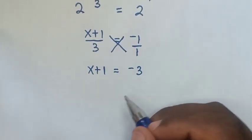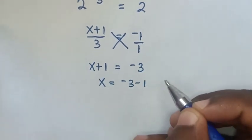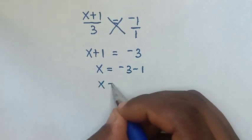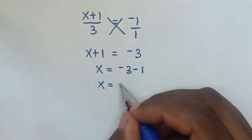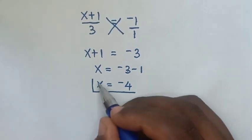Then we take 1 to the right side, so it will be x equals -3 minus 1. So x equals -4. This is the final answer for the value of x.